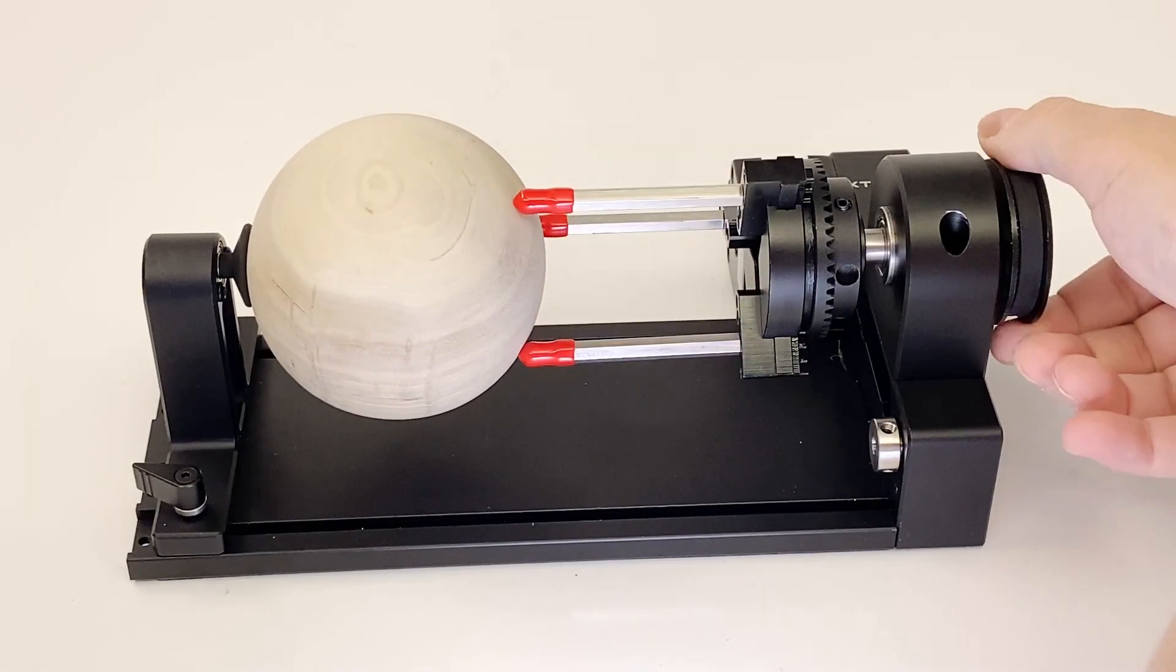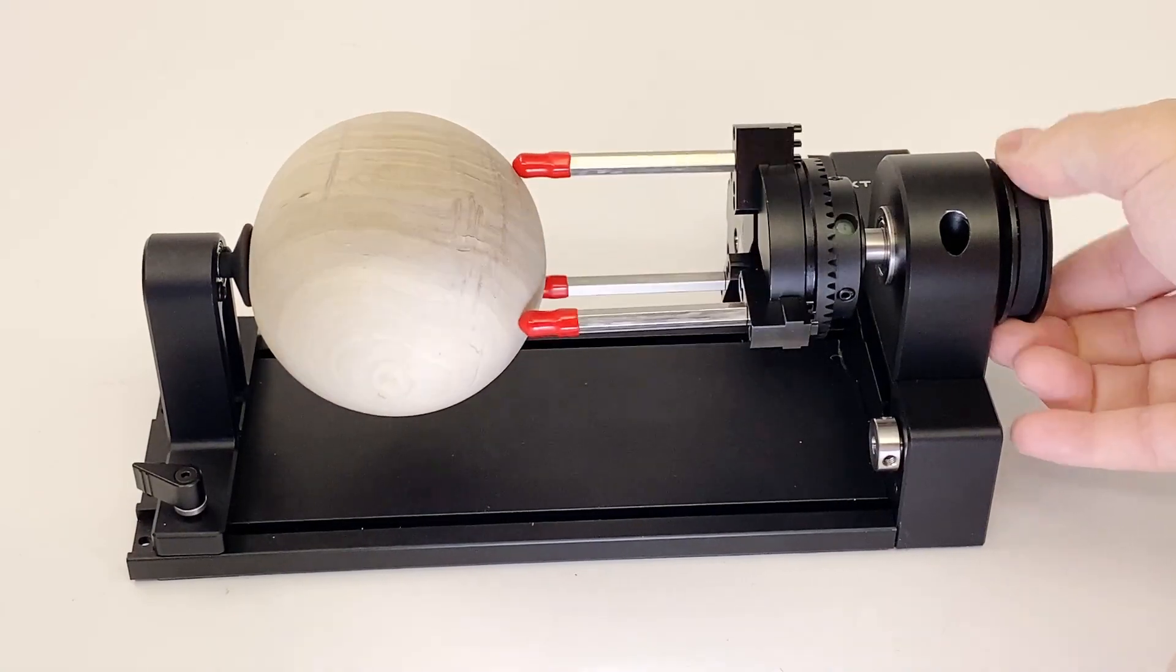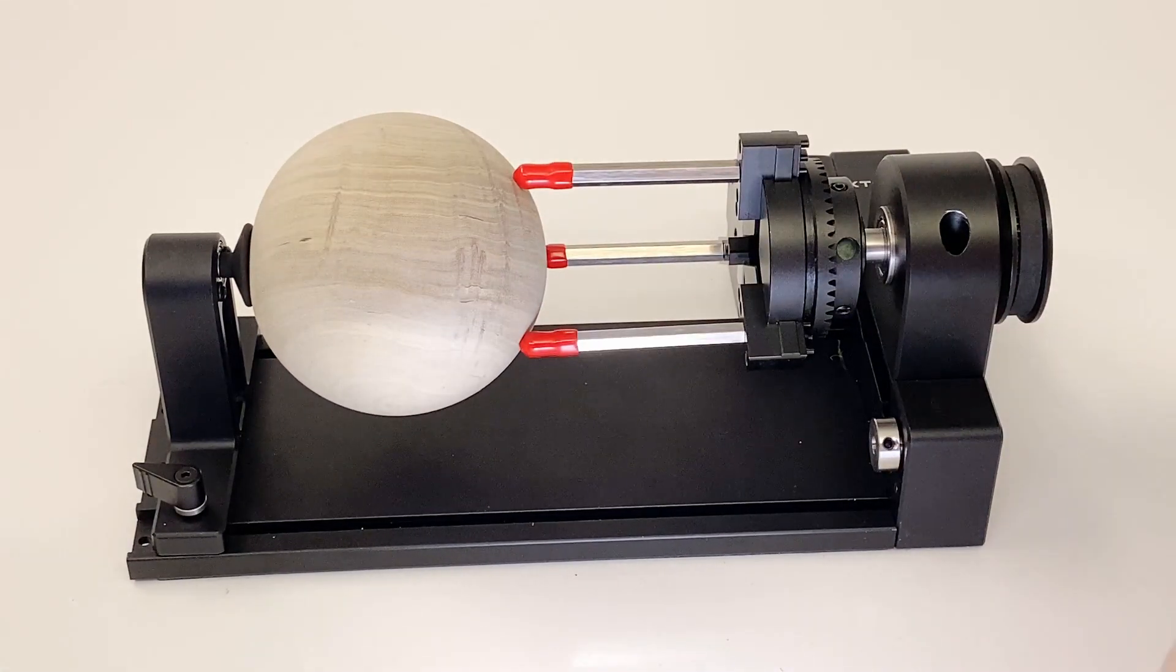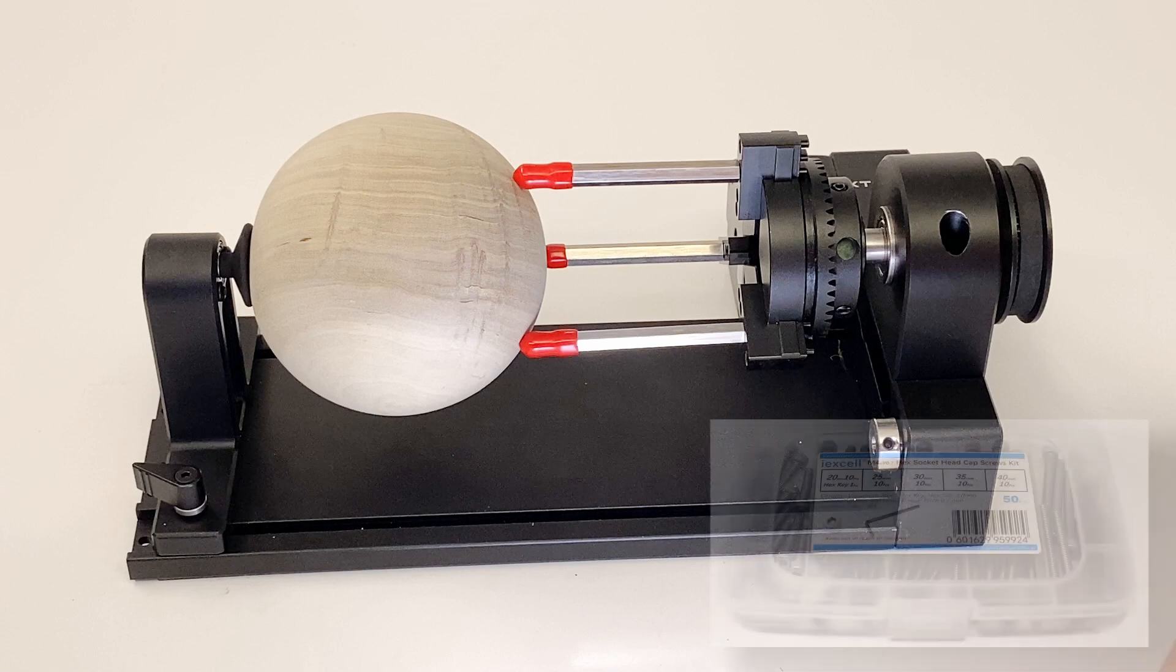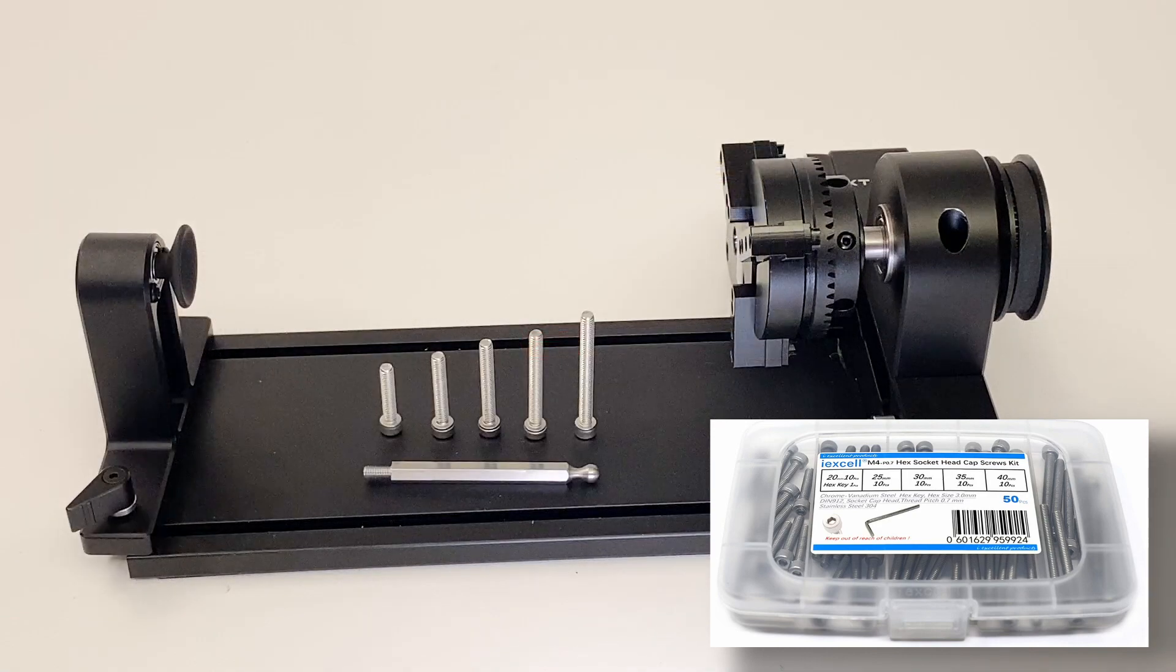One great use for the studs is to hold spheres between the chuck body and the tail module. However, I prefer to have some items closer to the chuck body. So the next tip is to get an assortment of 4mm socket head cap screws to use in place of the studs.